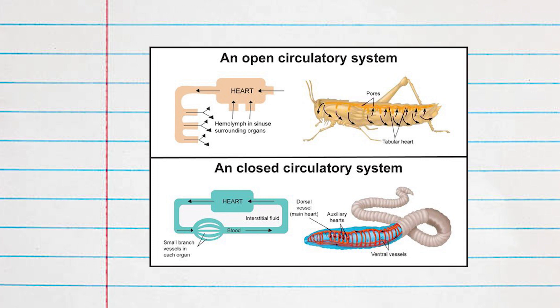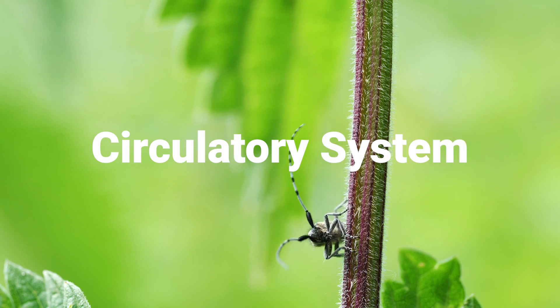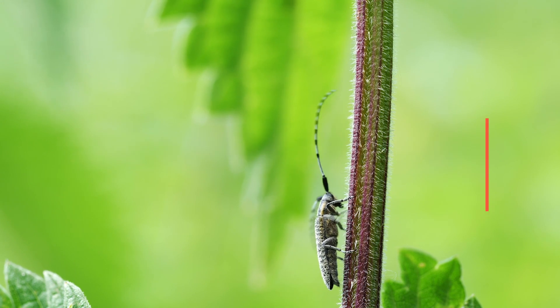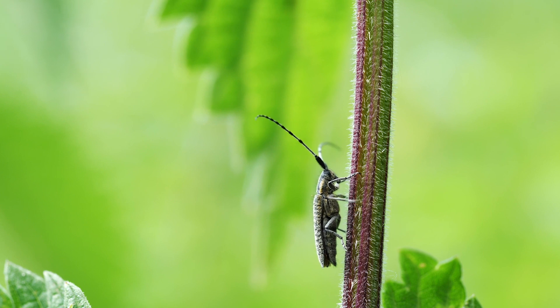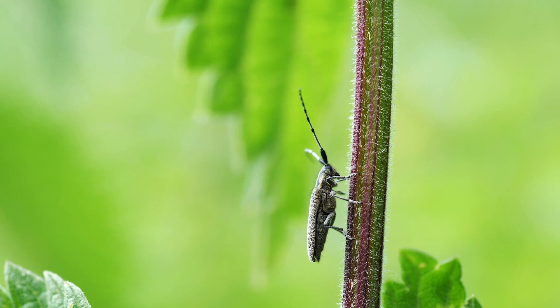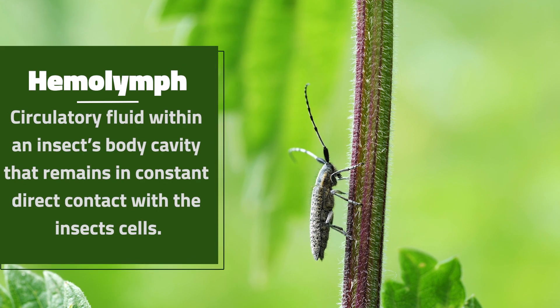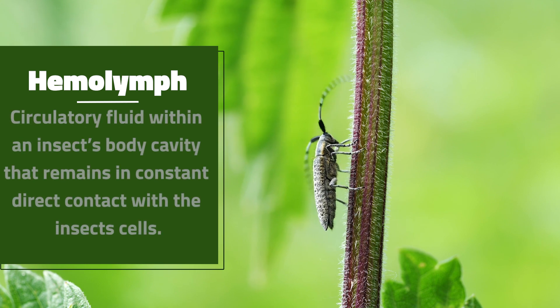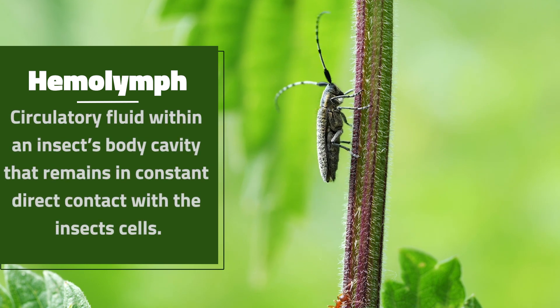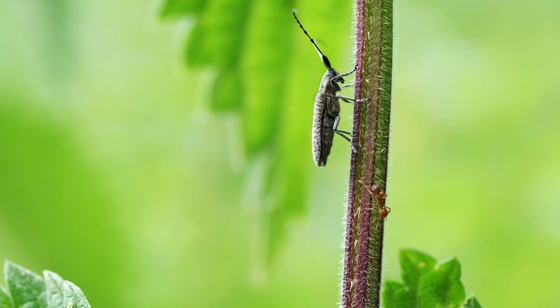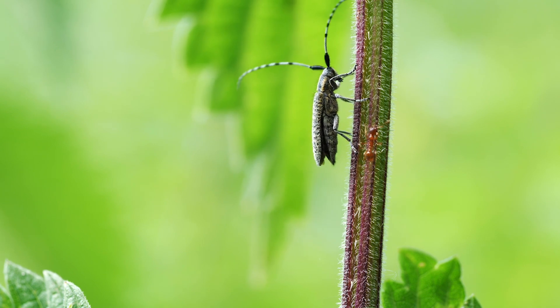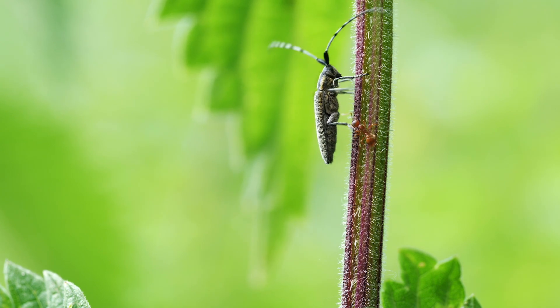Insects possess an open circulatory system, meaning circulatory fluid is not carried by vessels and is instead in constant contact with and bathing tissues directly. The dorsal vessel lines the top side of the insect and is responsible for pumping hemolymph through the insect's body cavity. Hemolymph is the circulatory fluid of insects, responsible for the transport of nutrients, hormones, peptides, and other vital chemicals throughout the body. The hemolymph also contains immune cells called hemocytes, which function similarly to our own white blood cells.